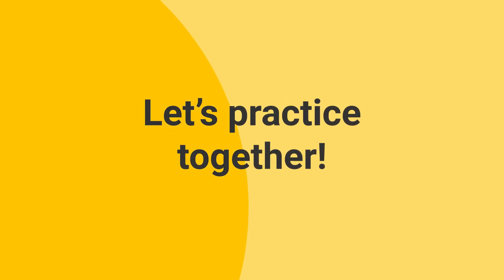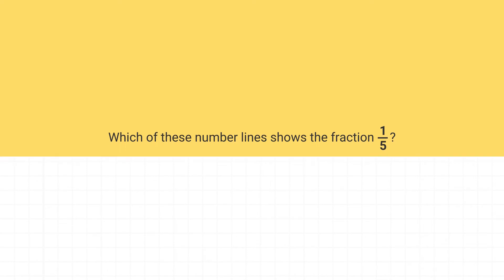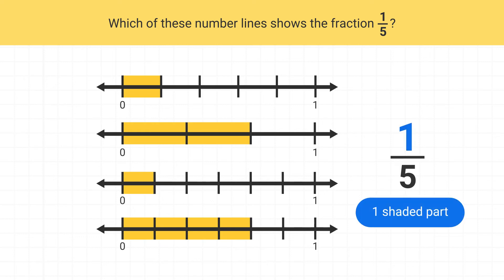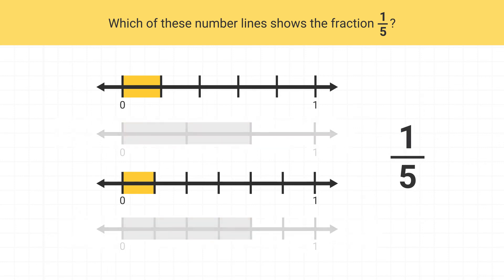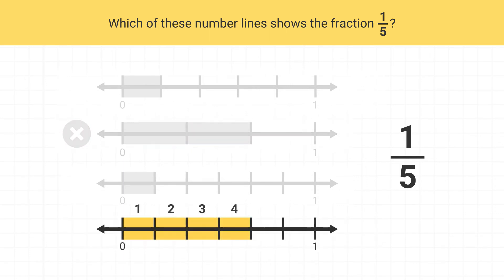Now let's practice together. Let's identify which of these number lines shows the fraction 1 fifth. We can start by looking for number lines that have only one part shaded. Select all of the number lines that have one part shaded. These two number lines both have one part shaded, so they could be correct. This one has two shaded parts, so it can't be correct.